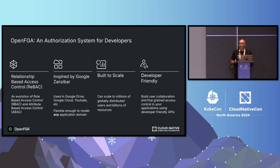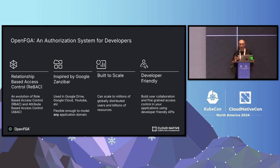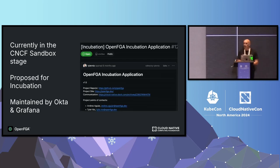OpenFGA is an authorization system for developers. It's based on a concept called relationship-based access control, and it draws on ideas published by Google in a paper describing a system called Google Zanzibar, which is how they implement authorization internally for all of their products. We package some of those ideas in a server plus tooling to make it simple to implement in any application. It's currently a CNCF sandbox project — we've been there for two years, we applied for incubation early this year, and it's mainly maintained by employees of Okta and Grafana. We welcome more companies that want to contribute.